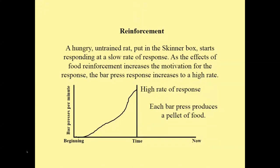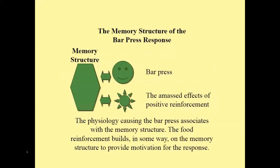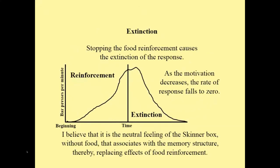A food pellet reinforces the response after each bar press. A hungry, untrained rat put in the Skinner box starts responding at a slow rate. As the effects of reinforcement increase the motivation of the response, the bar press response increases to a high rate. Here we see the memory structure of the bar press response and the amassed positive reinforcement. The physiology causing the bar press associates with the memory structure. The reinforcement decrease of food deprivation builds in some way on the memory structure to provide motivation for the response. Stopping the food reinforcement causes extinction of the response.